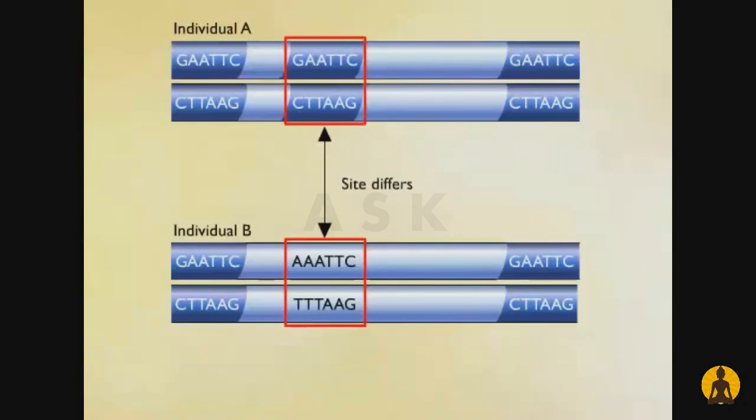These differences are referred to as Restriction Fragment Length Polymorphisms, or RFLPs. Such differences may arise through mutations.